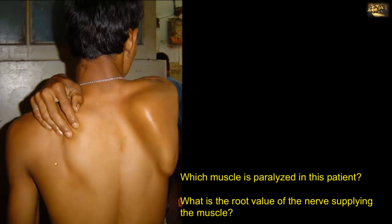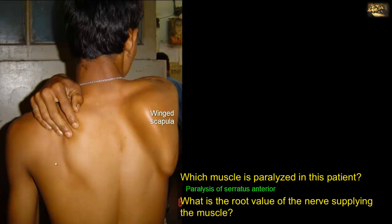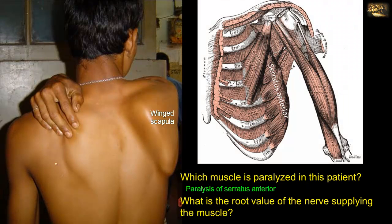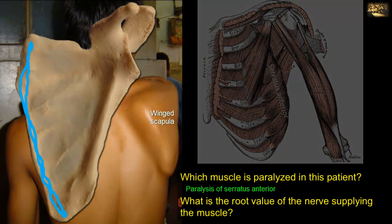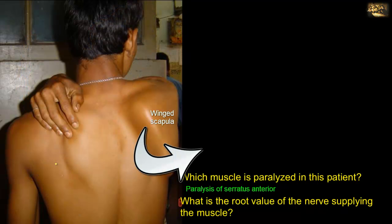Which muscle is paralyzed in this patient, and what is the root value of the nerve supplying it? In the picture, the medial border of the right scapula appears to be projecting backwards, giving the appearance of a wing — accentuated as the patient's arm is passively protracted. This condition is called winged scapula. The deformity results when the serratus anterior muscle is paralyzed. This muscle wraps around the thoracic wall and attaches to the anterior aspect of the medial border of the scapula, pulling it forwards against the thoracic wall. When paralyzed, the medial border projects backwards.